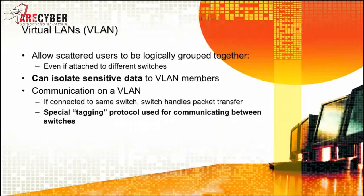Next, you have VLANs, or virtual LANs. This allows scattered users to be logically grouped together even if attached to different switches. They can isolate sensitive data to specific VLAN members, and communication on the VLAN happens through special tagging protocols used for communicating between switches. However, you will need to employ a router.